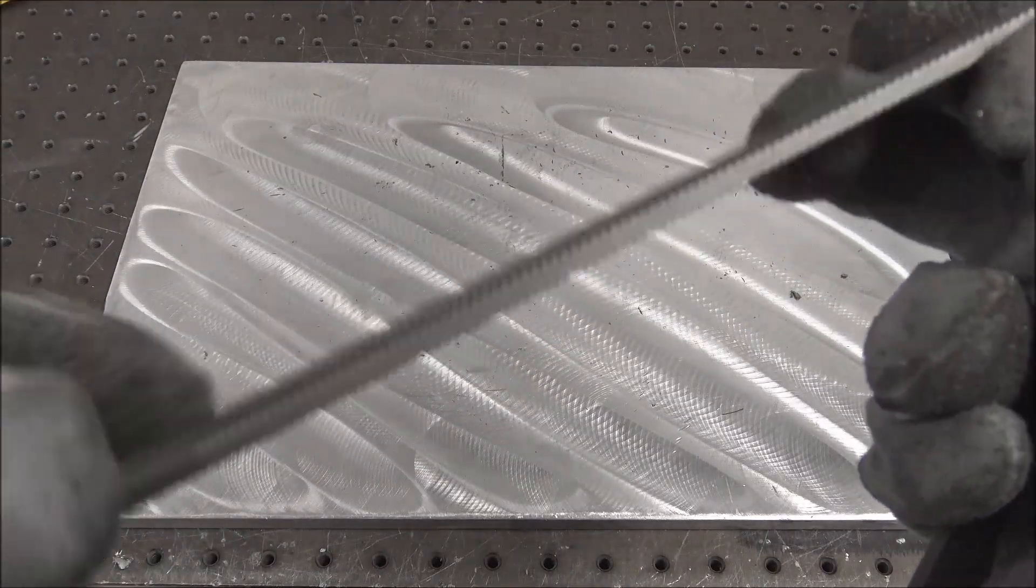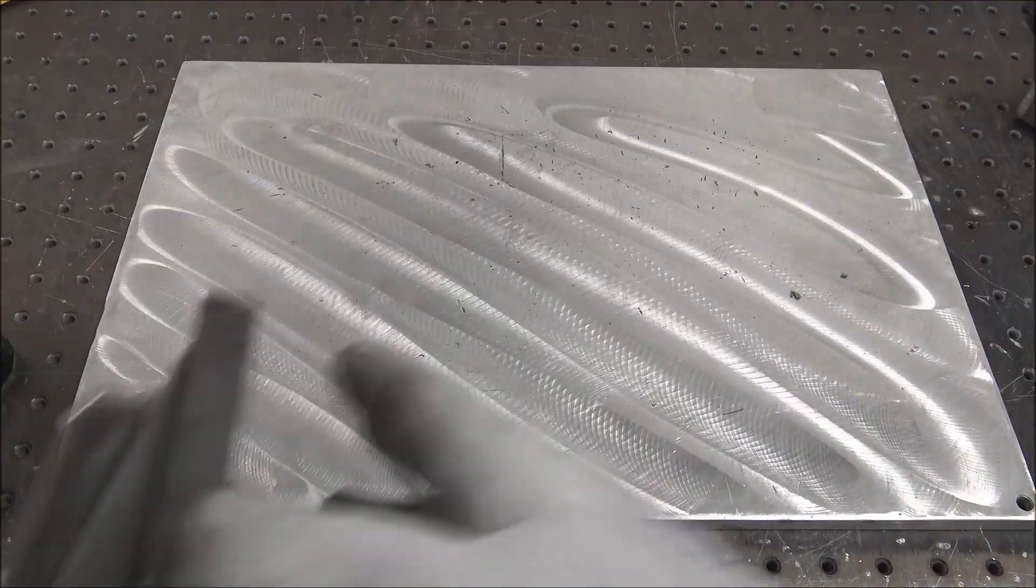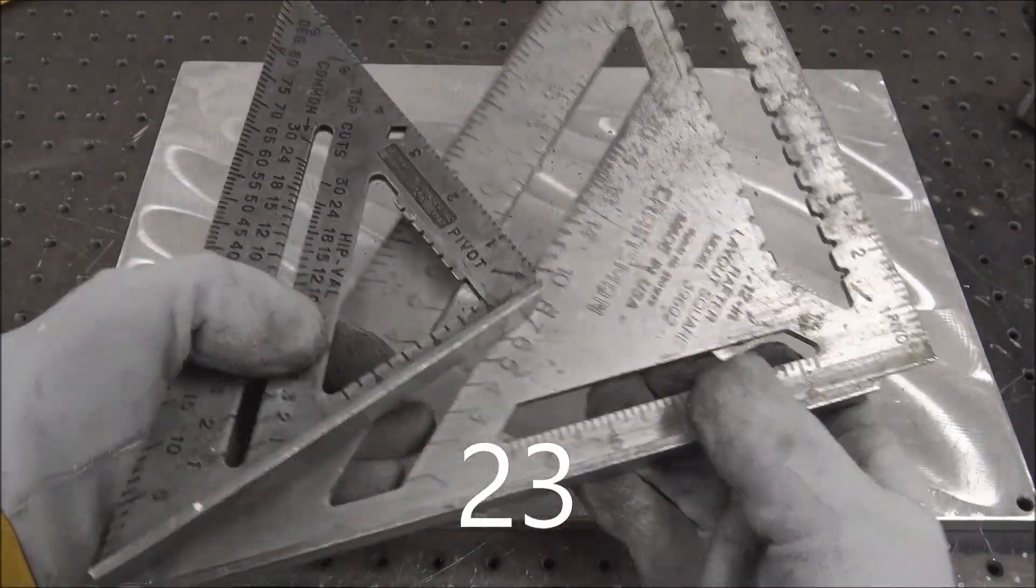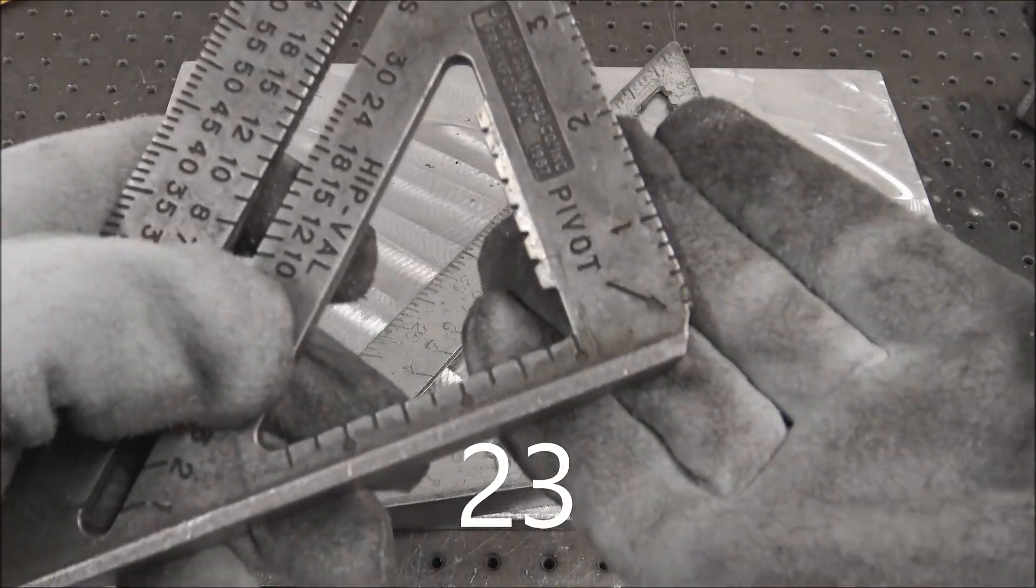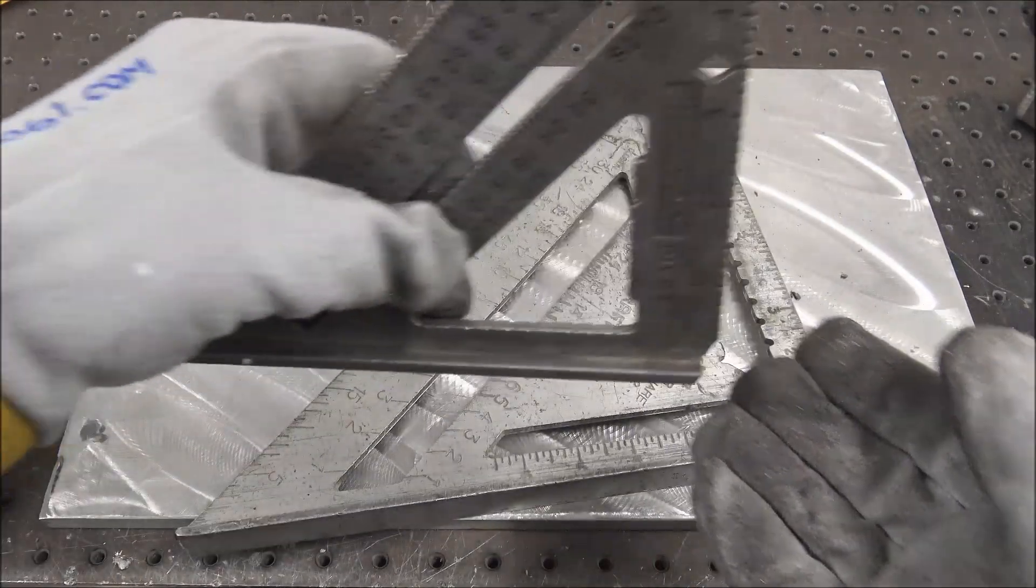Speed squares are super handy. A lot of times you'll want one where you grind that off so it clears a weld.